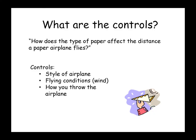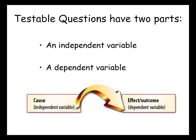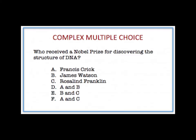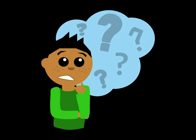What are the controls in this experiment? The style of the airplane, the flying conditions, and how you throw the airplane — these are all things you will want to stay the same if you are testing how the type of paper affects the distance the plane flies. Remember, a testable question is always about changing one thing to see the effect on another thing, and always has two parts: an independent variable and a dependent variable. When we say testable question, we don't mean it's a question you see on a test. If you are still unsure about testable questions, please re-watch the video or email me. Good luck!